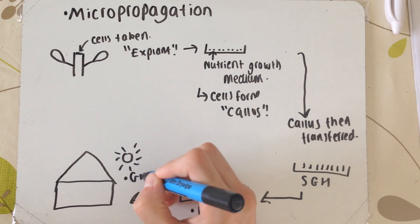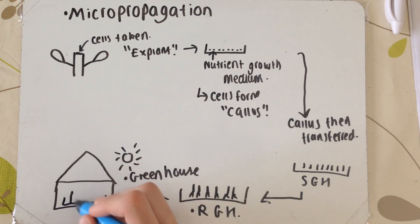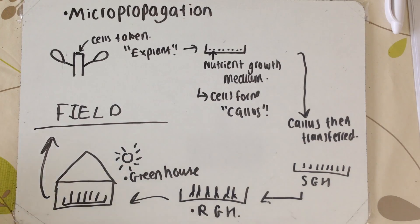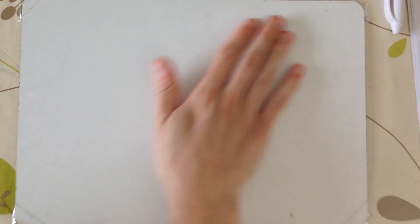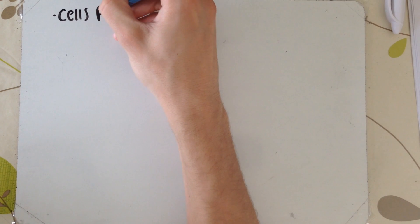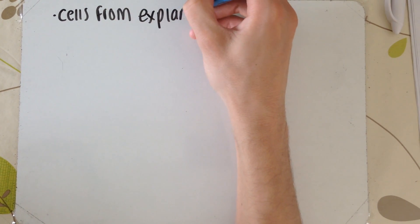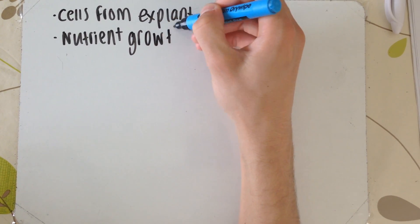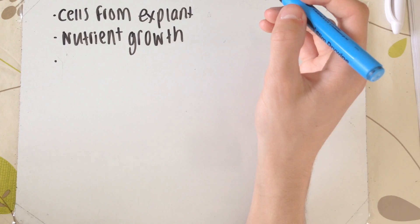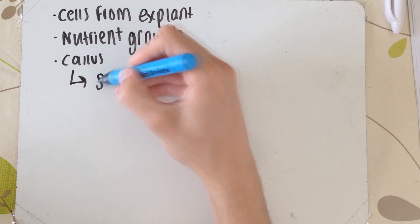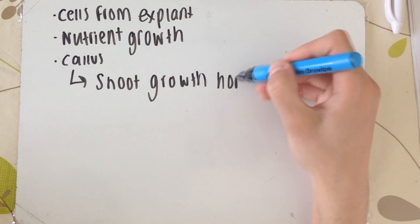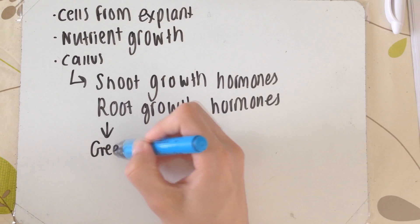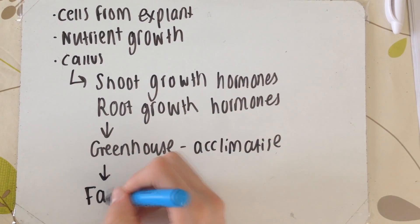These half-grown shoot-root plants are then transferred to the greenhouse, where they're acclimatized — given carbon dioxide via methane burners, sunlight, and so on — to get used to the actual environment rather than being on nutrient growth medium. After this, they are taken to the farmer's field and grown. To recap: cells are taken from the explant, placed in a basic nutrient growth medium to form a callus, then transferred to shoot growth hormones, then root growth hormones, then the greenhouse to acclimatize, and finally to the farmer's field.